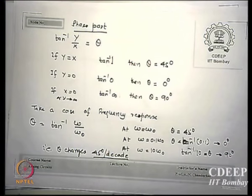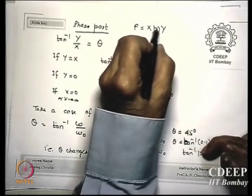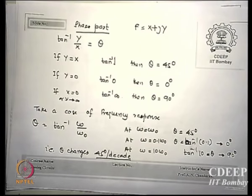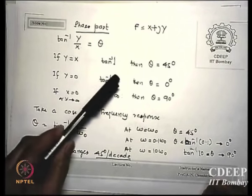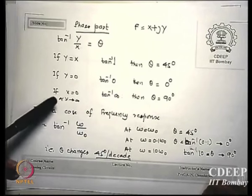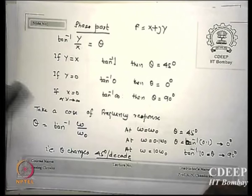So we were looking yesterday about poles and zeros. We will come back quickly for a few minutes about that again. If you take an arbitrary function x + jy, the phase of this function will be tan inverse of y/x. The phase angle theta: if y equals x, tan inverse of 1 is 45°; if y is 0, tan inverse of 0 is 0°; and if y is very large, tan inverse of infinity is 90°.